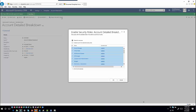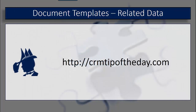So there you have it — that's how you work with document templates that contain related data from other entities, whether they are child entities, parent entities, or entities that participate in a many-to-many relationship. Definitely go ahead and play with it and see what the capabilities are. That's going to do it for this week's video. From all of us at CRM Tip of the Day, this has been Derek — thanks for watching, everybody. Take care and have a good one.